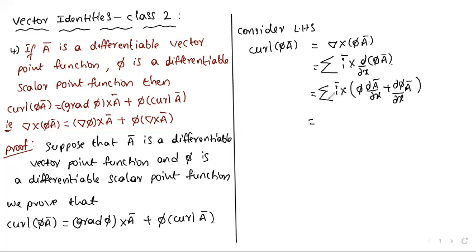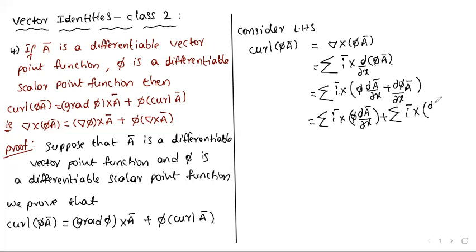Splitting the summation: summation of i-bar cross π·∂Ā/∂x plus summation of i-bar cross ∂π/∂x·Ā. Since π is a scalar point function, it comes outside the summation.